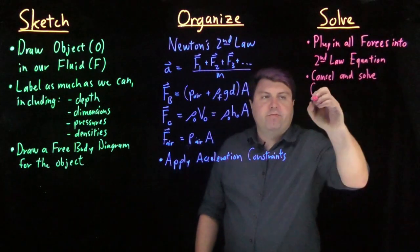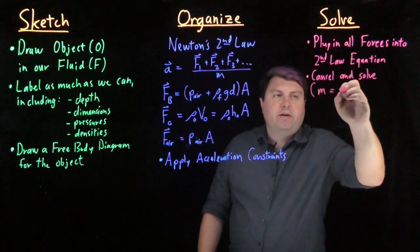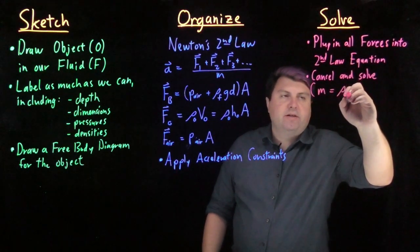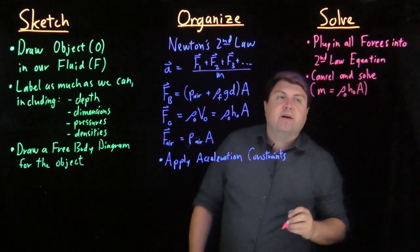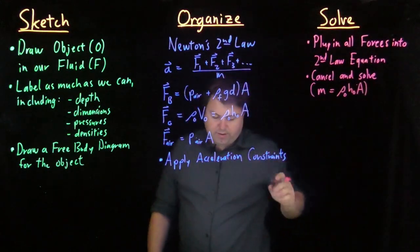Remember that we can write any sort of mass as the density of the object times the height of the object times its area, in case we want to cancel top and bottom.